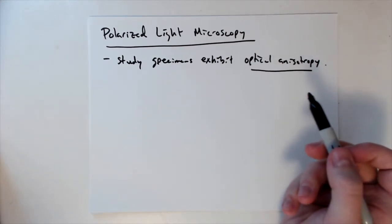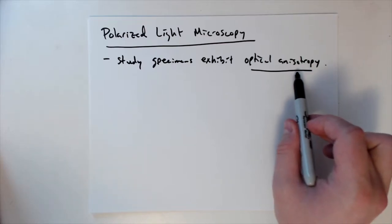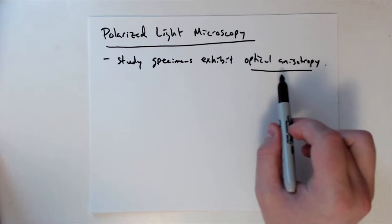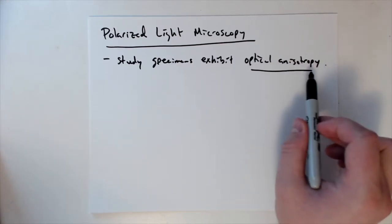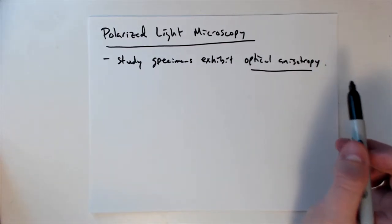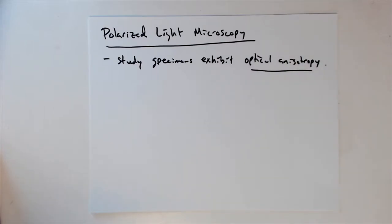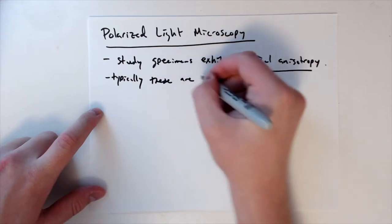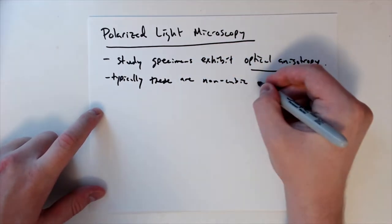Optical anisotropy — if you're unfamiliar with what anisotropy means, it means that there are variations in directions. There are variations in the optical properties dependent on different directions. That's the opposite of isotropy, where everything is the same in all directions. Optical anisotropy arises when we have materials that transmit or reflect light at different velocities in different directions, and that manifests itself as differences in the refractive index. Typically, these are non-cubic crystal structures.